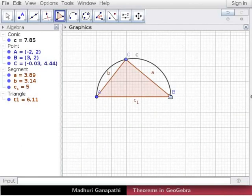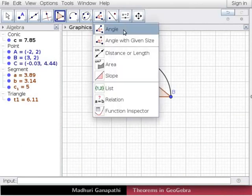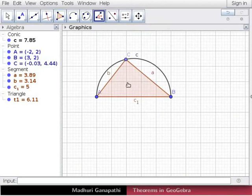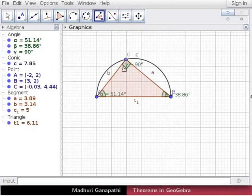Let us measure the angles of the triangle. Click on the angle tool and click inside the triangle. Here angle ACB is 90 degrees.